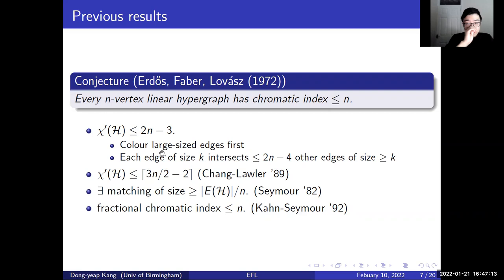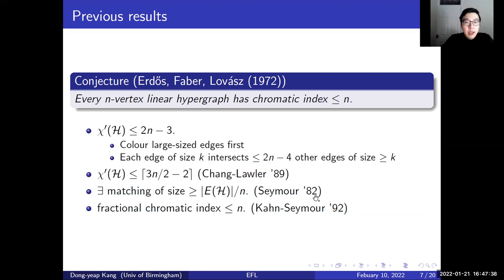Because the chromatic index is the minimum number of matchings to decompose the edge set, if the conjecture is true, then by considering the largest size color class, there should be a matching of size at least the number of edges divided by n. In 1982, Seymour showed that this is actually true. In 1992, Kahn and Seymour proved a fractional version of the EFL conjecture, which says that the fractional chromatic index of an n-vertex linear hypergraph is at most n.